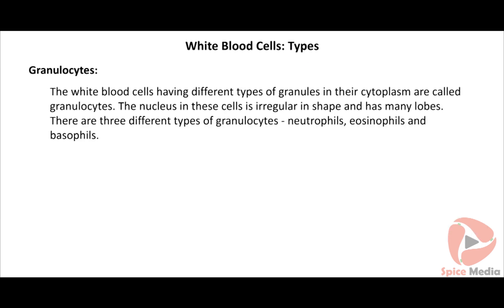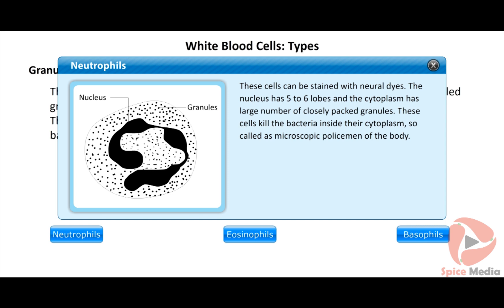Granulocytes are white blood cells having different types of granules in their cytoplasm. The nucleus in these cells is irregular in shape and has many lobes. There are three types of granulocytes: neutrophils, eosinophils and basophils. Neutrophils can be stained with neutral dyes; the nucleus has five to six lobes and the cytoplasm has a large number of closely packed granules. These cells kill bacteria inside their cytoplasm, so they are called the microscopic policemen of the body.